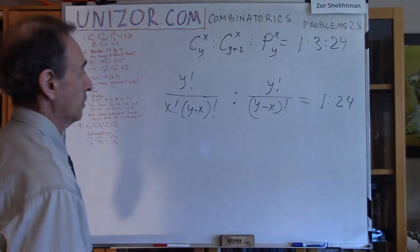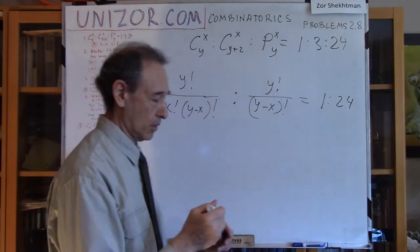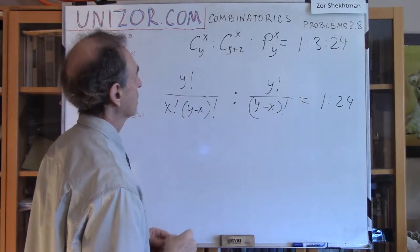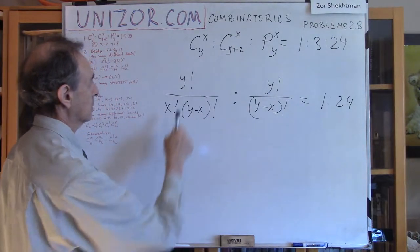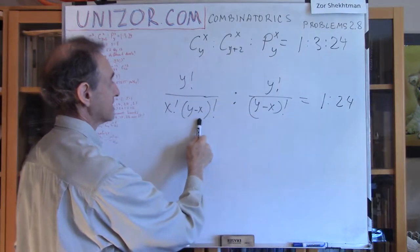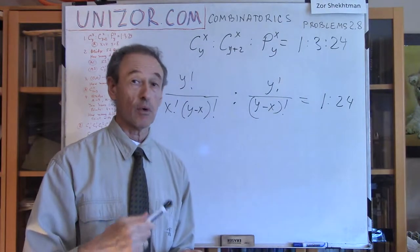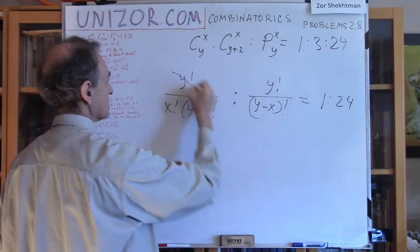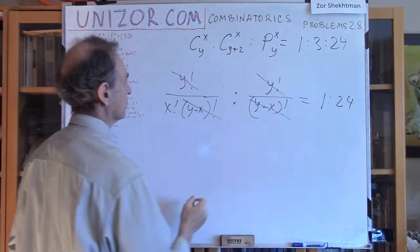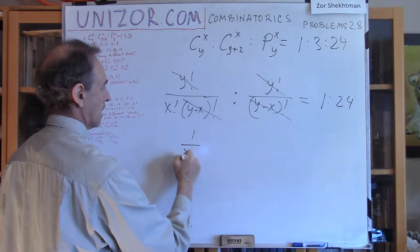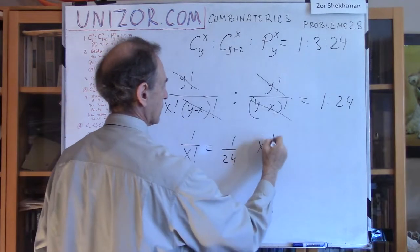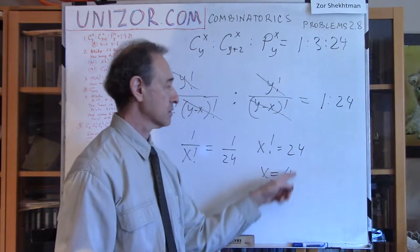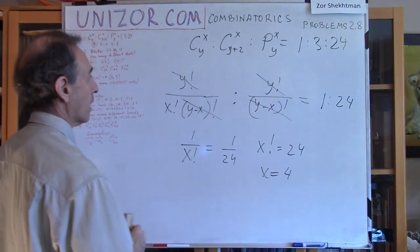How can we solve it? It's actually very easy. Because first of all, we know that y and x are natural numbers, and in this particular case we can safely assume that y factorial is not equal to 0 and y minus x factorial is not equal to 0, because y is always greater or equal to x. So y minus x is greater or equal to 0, and 0 factorial is 1. Nothing is 0, so we can safely cancel this out, and what do I have? I have 1 over x factorial equals 1 to 24, or x factorial equals 24, or x equals 4. 1 times 2 times 3 times 4 equals 24.